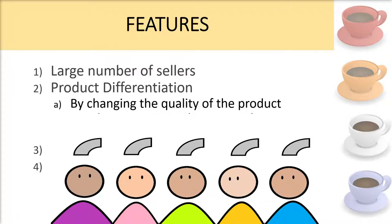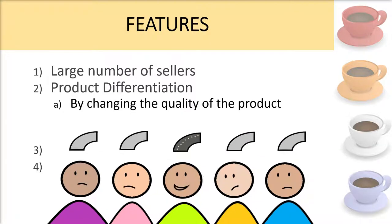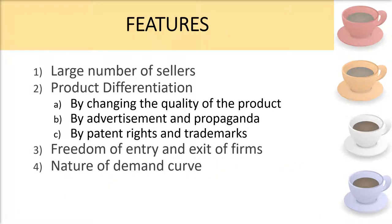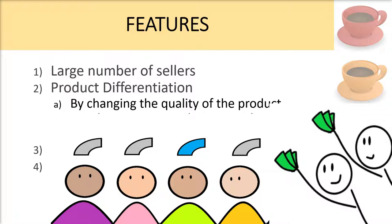First, you can change the quality of a product. Products can differ based on workmanship, durability, size, shape, design, color, fragrance, packing, and so on. Product differentiation through quality changes is done for the purpose of adapting the product to the tastes and preferences of the consumers, so the producer will attract more customers towards his product in this way.